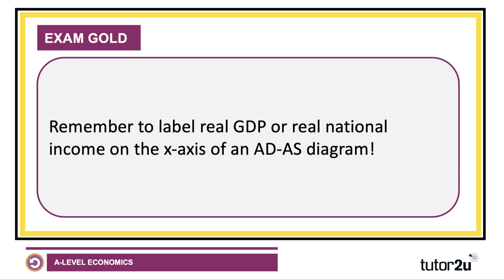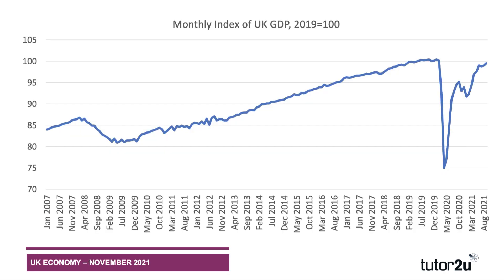A quick reminder about your analysis diagrams: remember to label real GDP or real national income on the x-axis of an aggregate demand and supply diagram. Don't just put 'quantity' or 'output' — put 'real national output.'